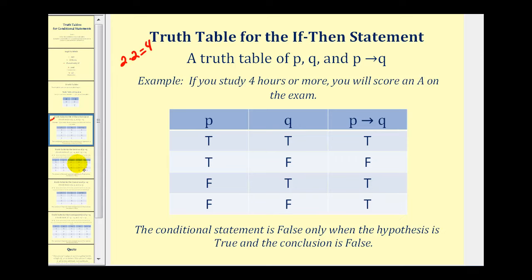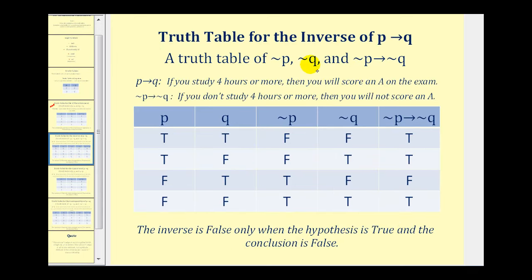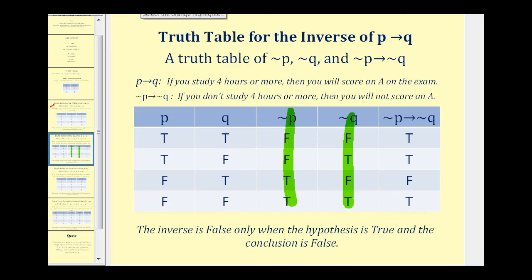Let's take a look at the next example. We want to complete a truth table for not P, not Q, and if not P then not Q — this is actually the inverse of if P then Q. We'll list P and Q as before. Notice that P and not P are just opposites: when P is true, not P is false, and when P is false, not P is true. The same applies to Q and not Q. To complete the last column, we only look at the not P and not Q columns. This conditional is only false when the hypothesis not P is true and the conclusion not Q is false, which occurs in exactly one row. Everything else is true.